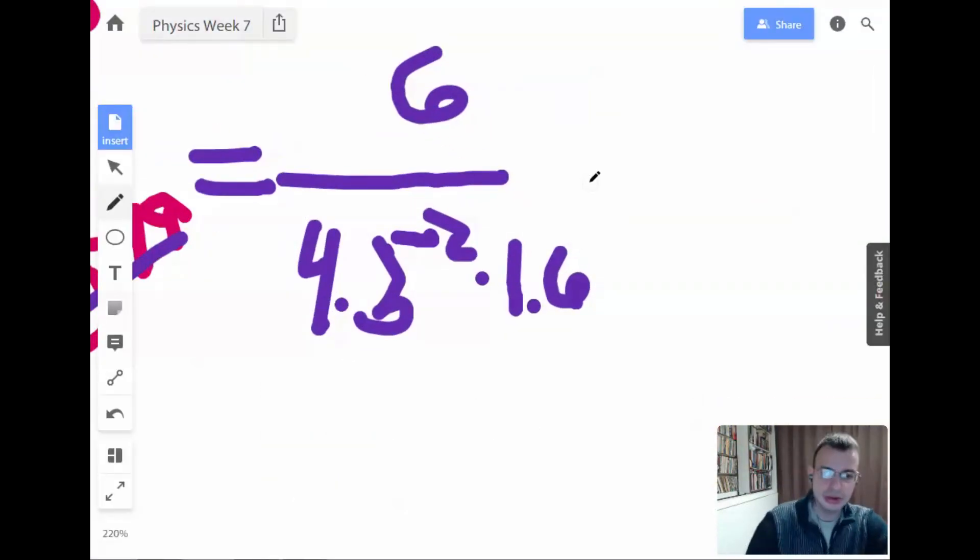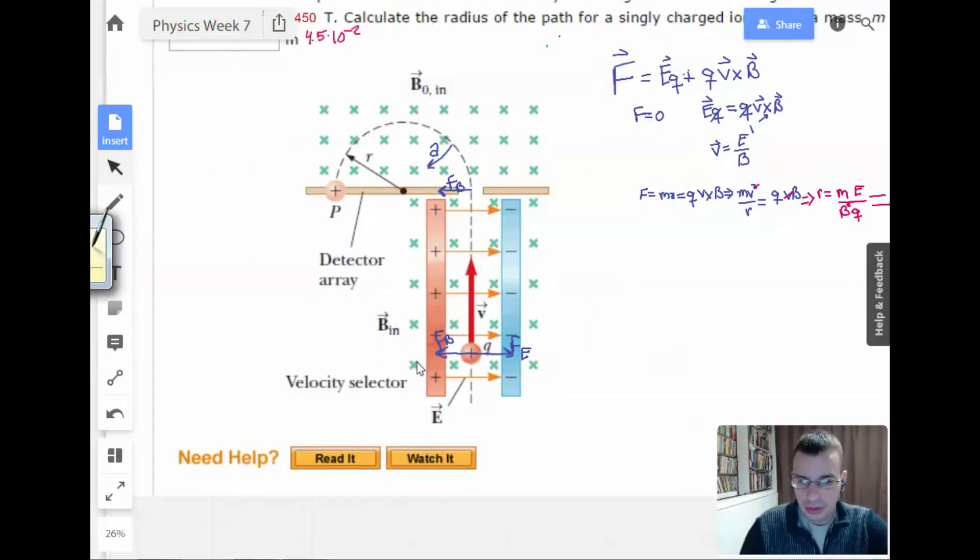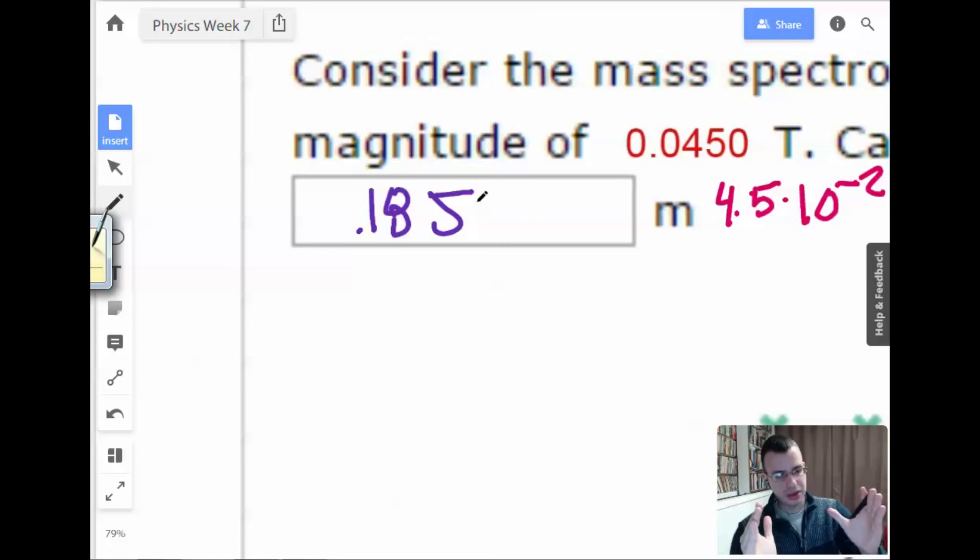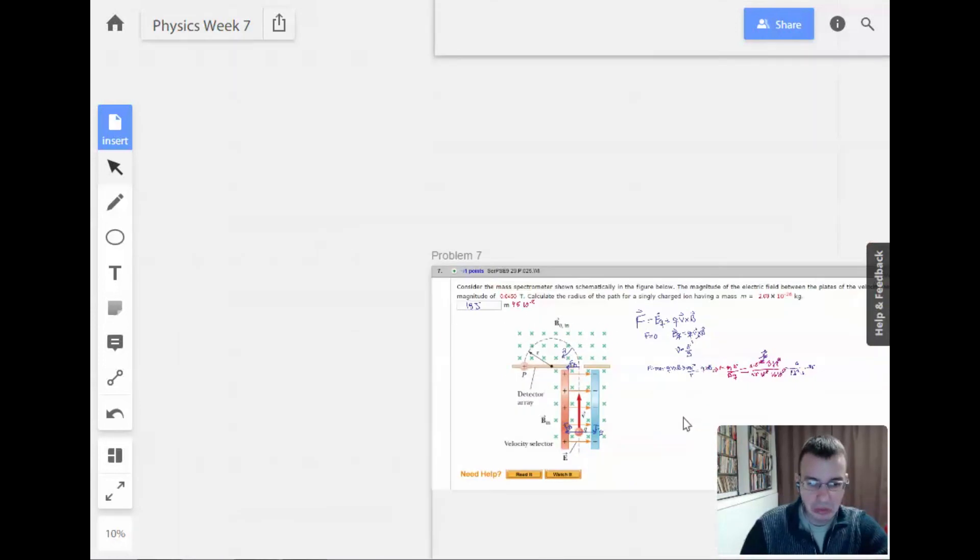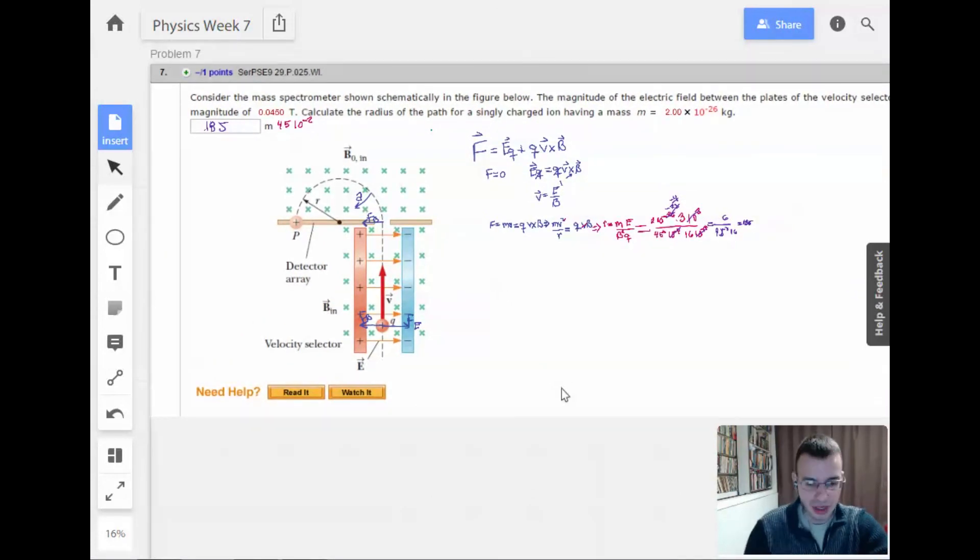That's like, that seems like maybe that big. Maybe that big. Yeah. I could see that fitting in like a lab. So. Alright. And that is how you do a mass spectrometer problem, I guess. That's not too bad. Alright. Moving on to problem eight. Thank you.